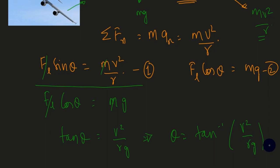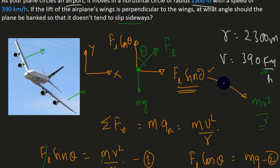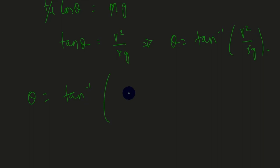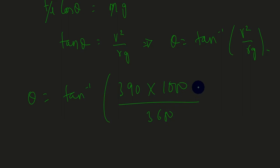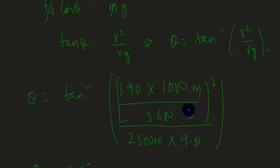Substituting values: θ = arctan[(390 × 1000/3600)² / (2300 × 9.81)]. Solving this gives θ = 28 degrees. So the plane must be banked at 28 degrees for the turn. That's the answer for this question.